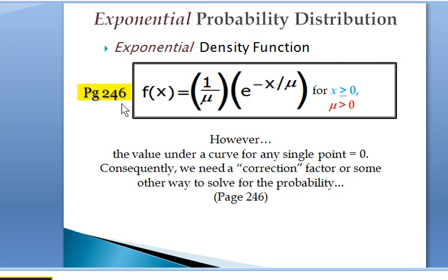That means that we would use the formula that is provided by the authors on page 246, and that function would describe the shape of the curve. Now, we see the letter E there. That would tell us it's an exponential curve, and one over mu would give us the coefficient, which will affect the height.